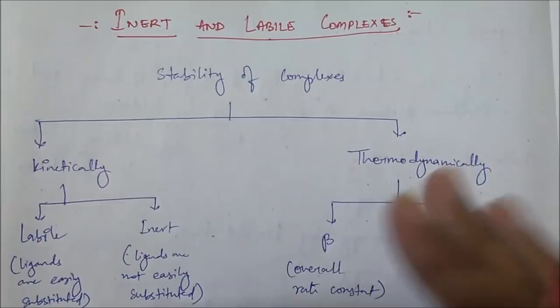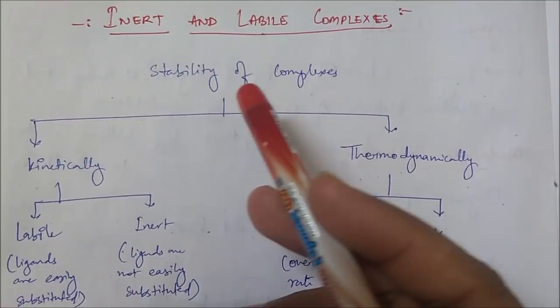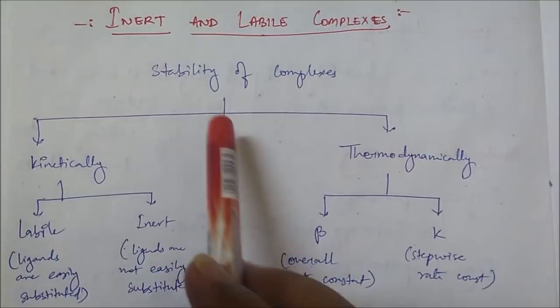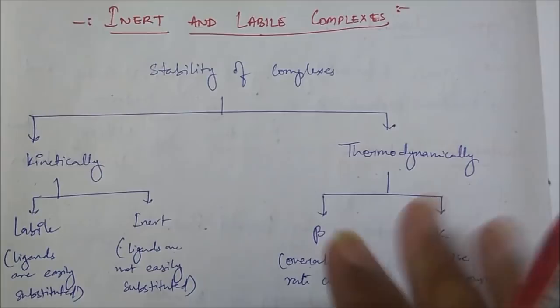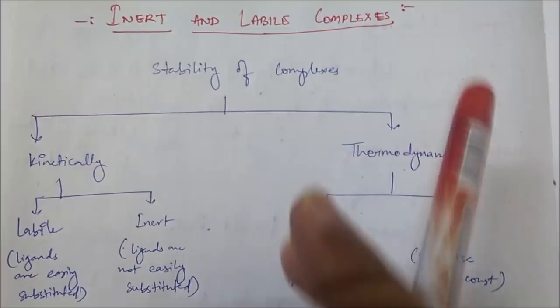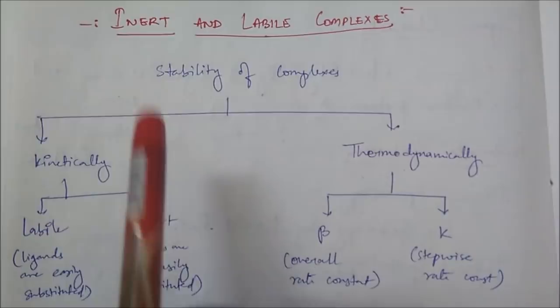Inert and labile complexes — first, this topic is about the stability of complexes. Inert means the complex is not reacting, and labile means it is prone to react. If proper conditions are provided, a labile complex can undergo reaction. So inert means it will not react, and labile means it is prone to react.